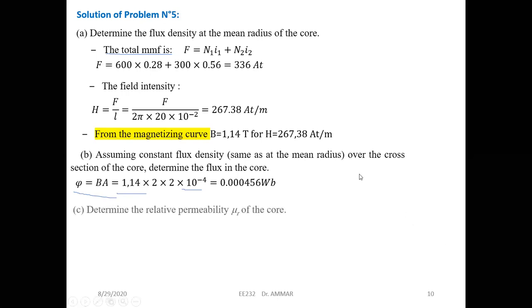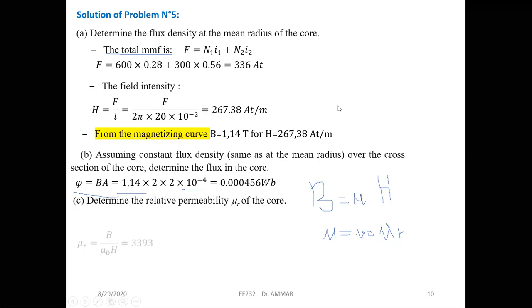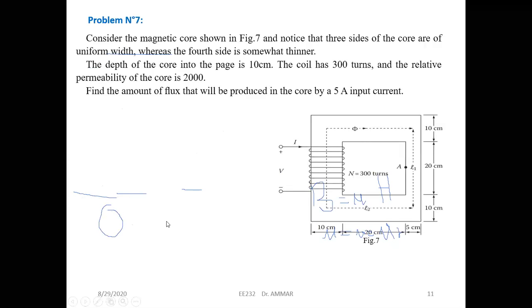Now, determine the relative permeability of the core. We know that B = μ·H and μ = μ0 × μr. Since we have the value of B, H, and the constant μ0, we can determine μr directly. μr = B / (μ0 × H). All values are known, so μr equals 3393.